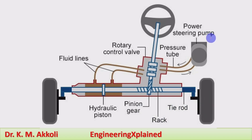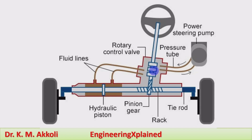The power steering pump supplies fluid at higher pressure to the system. That pump is connected to the main shaft by a belt drive and runs on vehicle load. The rotary control valve is connected to the steering wheel, and whenever the steering wheel is rotated, the rotary control valve changes the direction of flow of the fluid, which changes the direction of turning of the wheel.